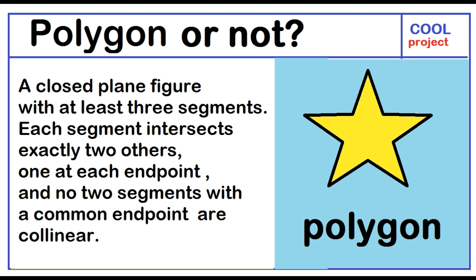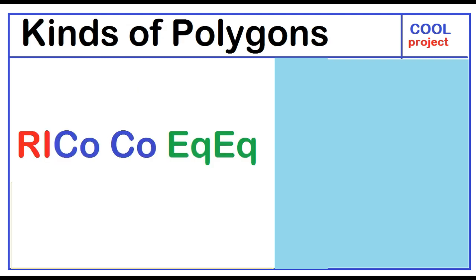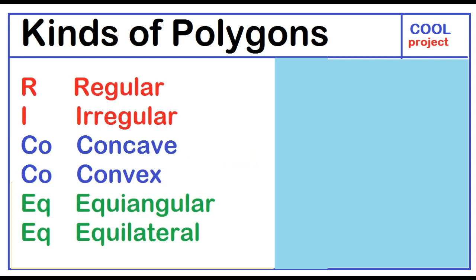Kinds of Polygons. Remember this name, Ricco-Co-Eck-Eck. The name stands for the kinds of polygons: Regular, irregular, concave, convex, equiangular, equilateral.